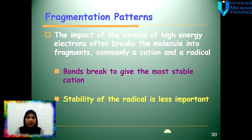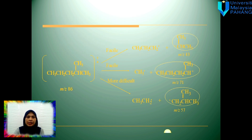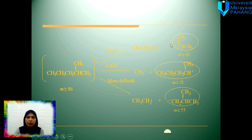Bond breaks will give the most stable cation, and the stability of the radical is less important. This is the fragmentation pattern where the molecule has been written down in the form of a radical cation, and it shows us different fragments based on the fragmentation peaks in the mass spectrum.